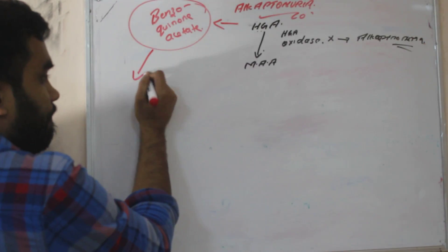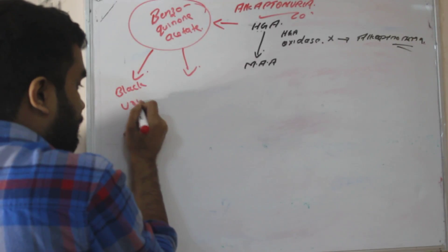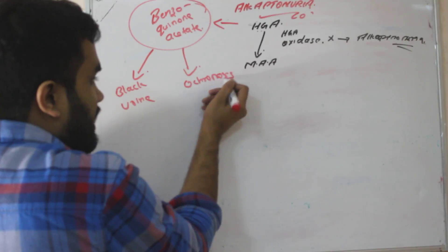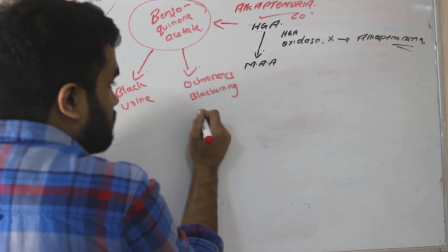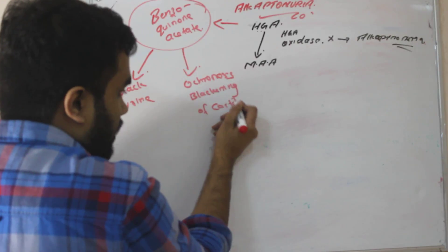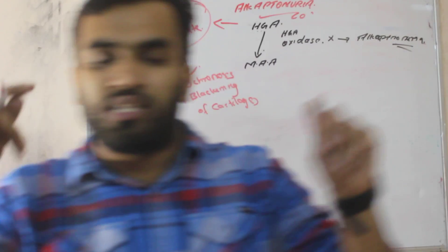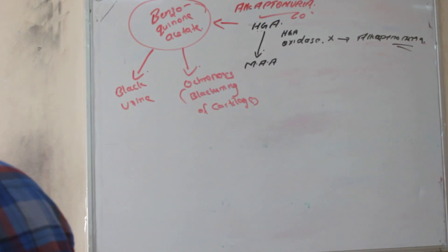So it will form two sort of things. That is one is our black urine. Other one is ochronosis. Ochronosis means blackening of cartilage. The ear, pinna, the extremities, the nose, sclera will be blackened. That is one is ochronosis.